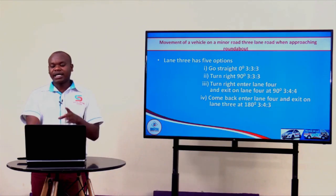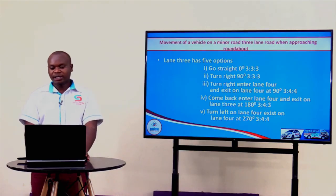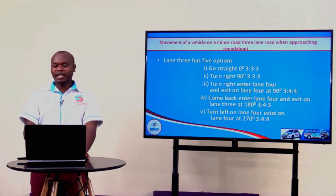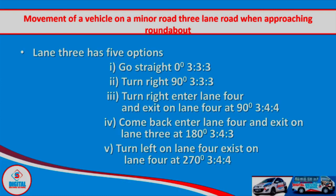The fourth option is to go back to where you came from: enter lane four and exit using lane three, making a 180-degree turn. The fifth option is to turn left: we are in lane three of a minor road, at the roundabout we enter lane four, do a 270-degree turn, and exit using lane four.